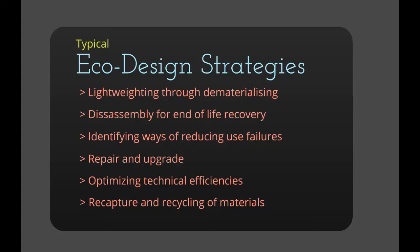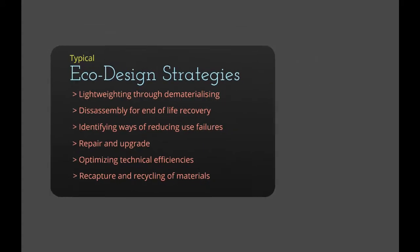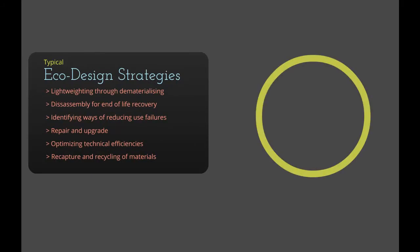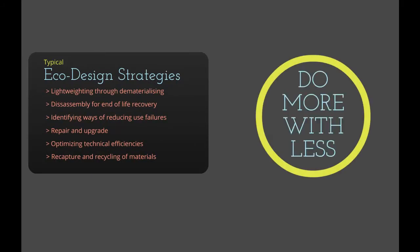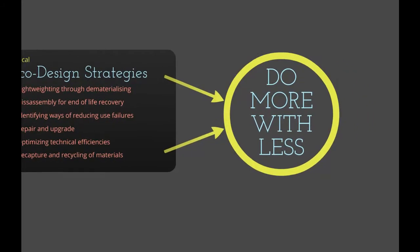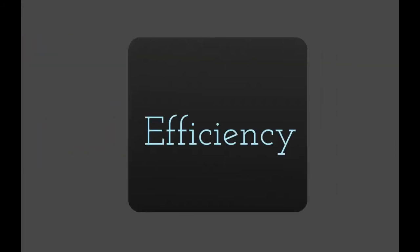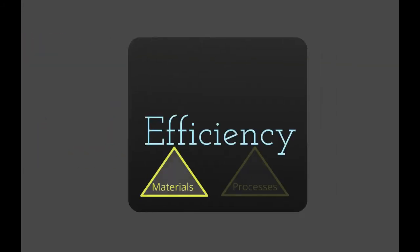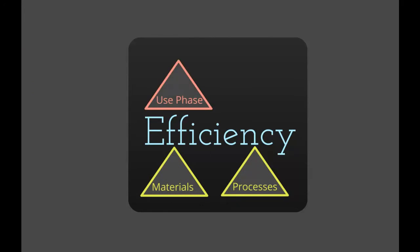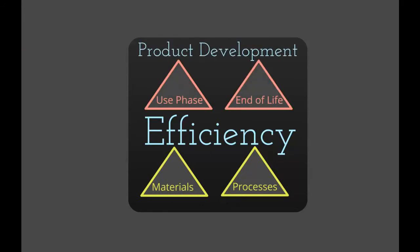Whilst there are a variety of eco design strategies, the principle is really simple. We do more with less. It's about being efficient in not only the materials and processes required to produce a product, but in the way in which the product operates in its use phase and how it's managed at the end of its life.